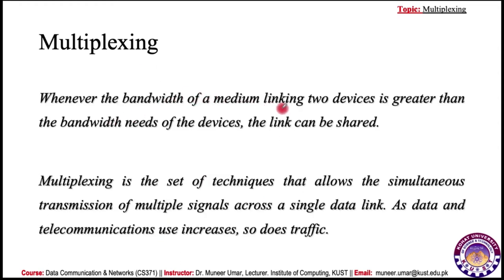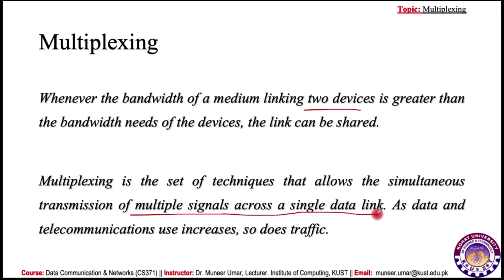Whenever the bandwidth of a medium linking two devices is greater than the bandwidth need of the devices, the link can be shared. If you don't share the link then it would be half duplex or simplex, so for full duplex we need the link to be shared among the devices. There might be multiple devices on a single link, and for that case the multiple devices will share the common link. Multiplexing is the set of techniques that allow the simultaneous transmission of multiple signals across a single data link — multiple signals across a single data link.